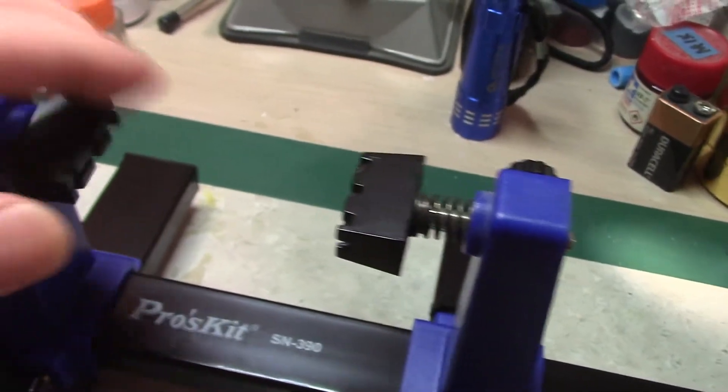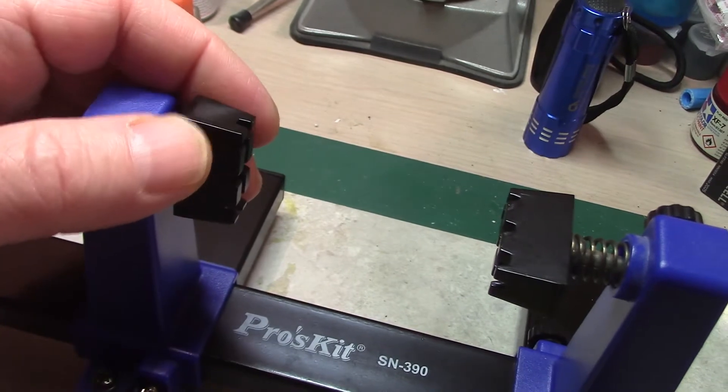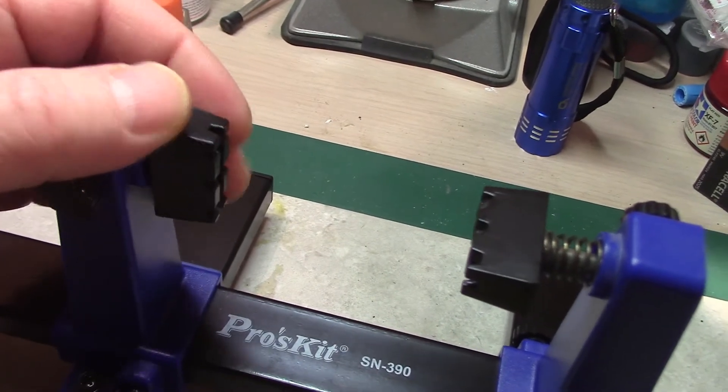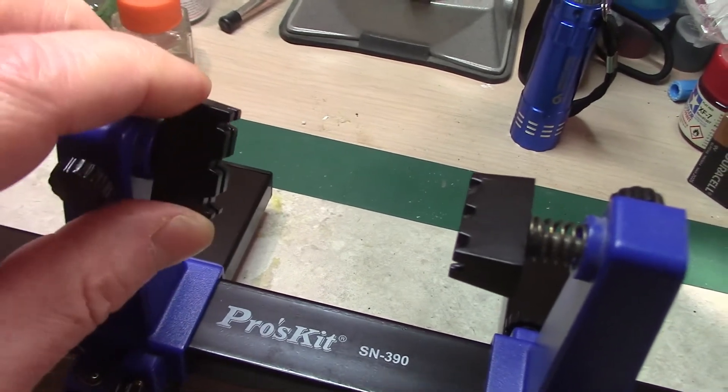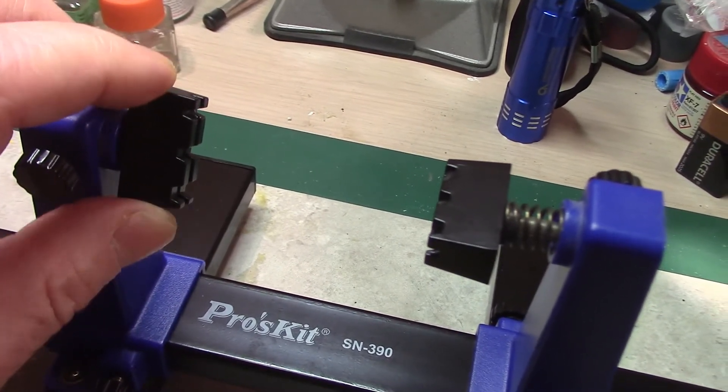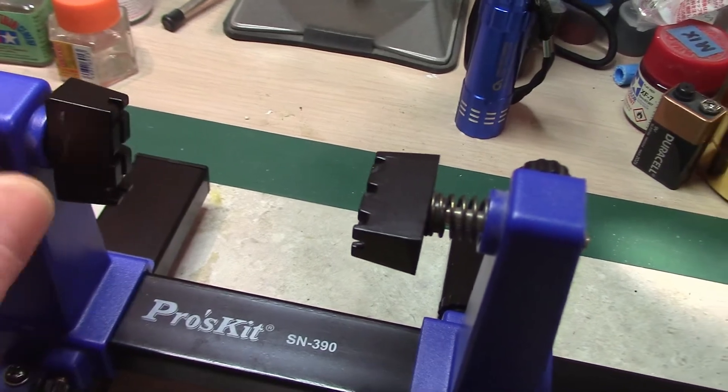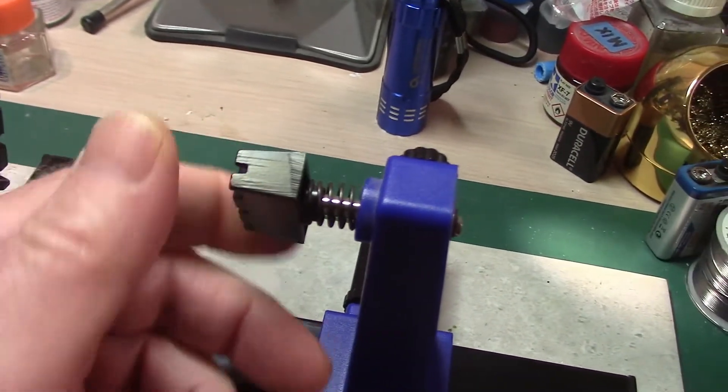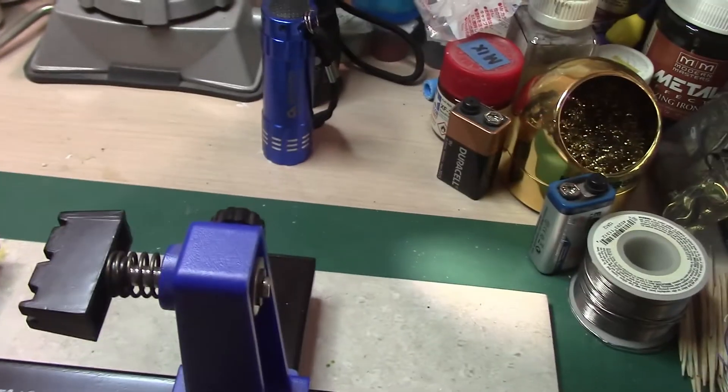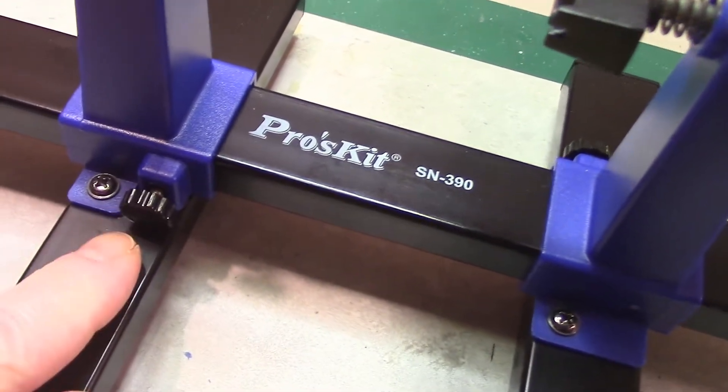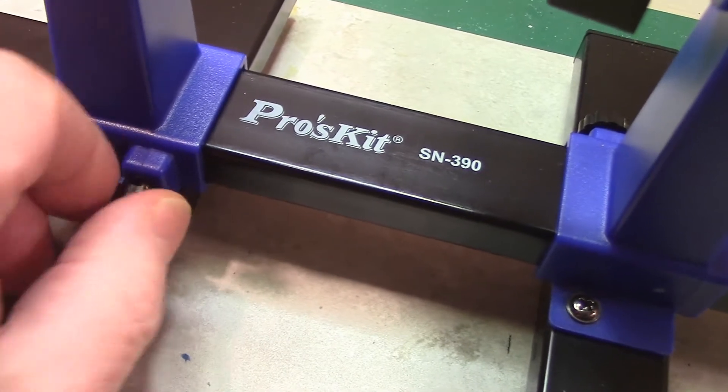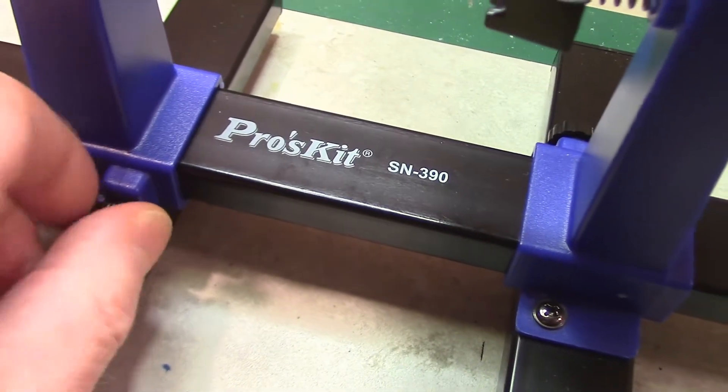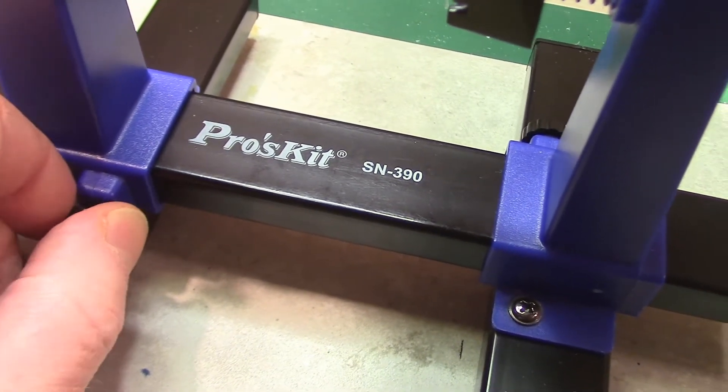Up here you can see you can adjust each side to however you want to set the board on, and then you can tighten it down here and just hold it in position to do the soldering on the board. Same with this side here. And then you can tighten it down here for whatever length the board is.